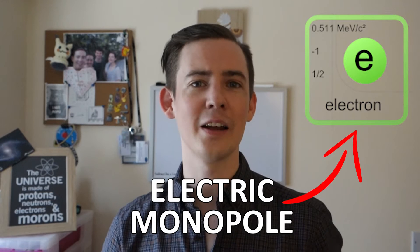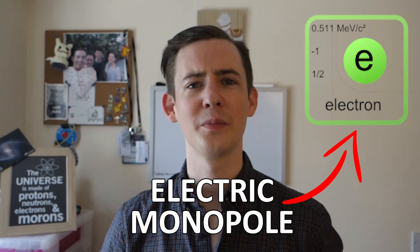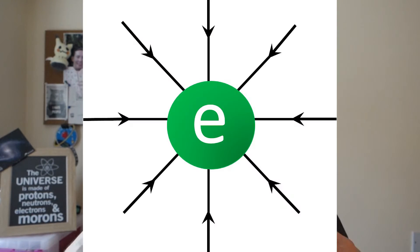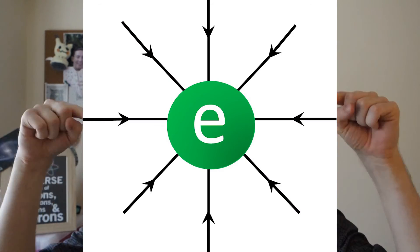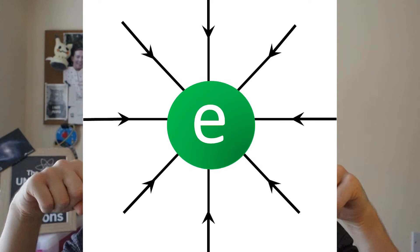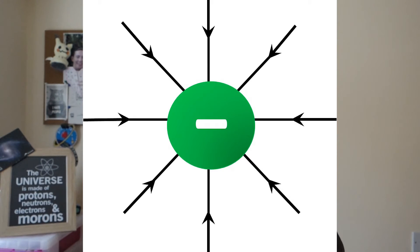The electron, one of the fundamental particles in the universe, is an electric monopole. If you were to draw the electric field around an electron, it would just be lines going straight into the electron, because it has a negative charge.